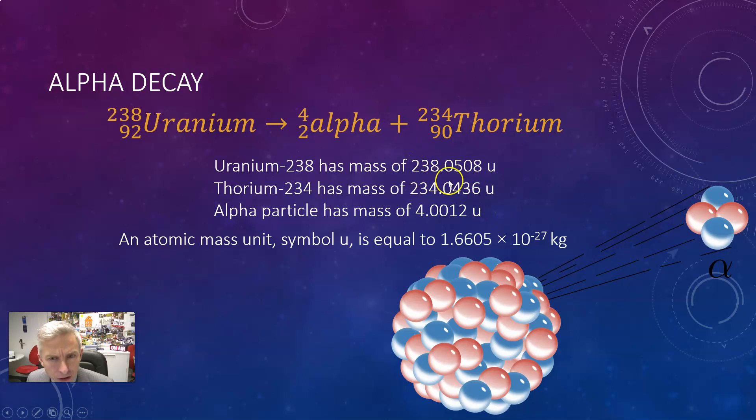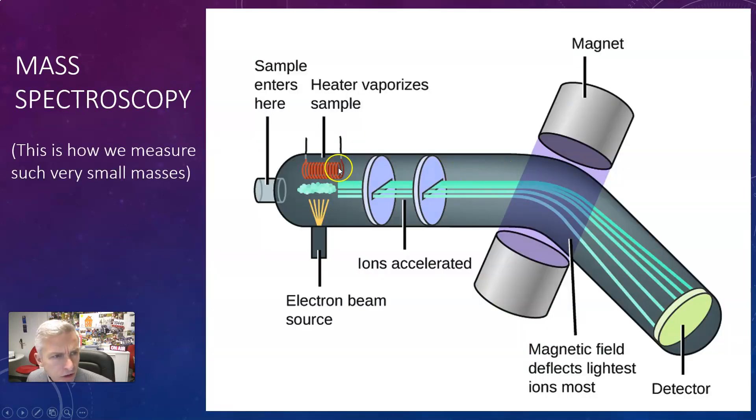As a little aside, these masses are measured in u atomic mass units and you need a mass spectrometer in order to measure those so accurately. The mass is bent by a known magnetic field strength and depending on how much they bend we can determine exactly how massive they are.